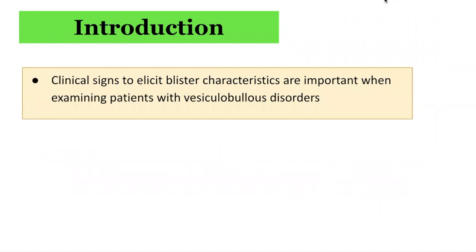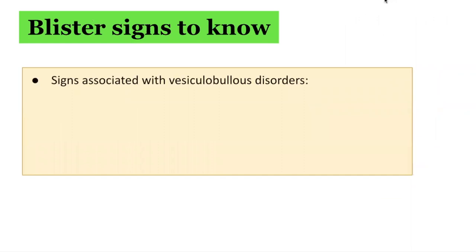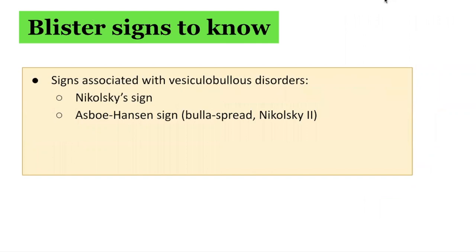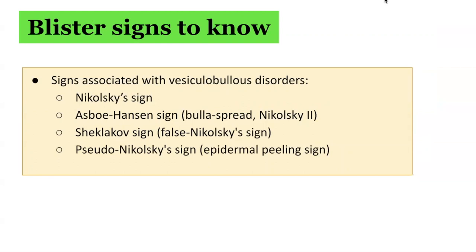Clinical signs to elicit blister characteristics are important when examining patients with vesico-bullous disorders. Signs associated with vesico-bullous disorders include Nikolsky sign, Asbo-Hansen sign — also known as bullous spreading sign or Nikolsky 2 sign — Shekhlakov sign, otherwise known as false Nikolsky sign, and finally pseudo-Nikolsky sign, otherwise known as epidermal peeling sign.